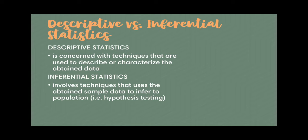So first, let's differentiate descriptive versus inferential statistics. Descriptive statistics is concerned with the techniques used to describe or characterize obtained data. By the word descriptive, we're going to be describing and characterizing the data, looking at the distribution of certain values in a given data set, seeing how spread they are from each other, and basically what values they usually converge in. Those are the types of questions we ask when we want to answer using descriptive statistics.